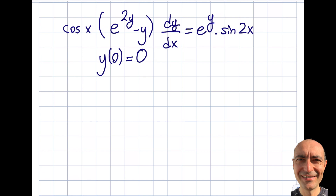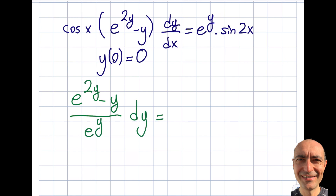First I need to check whether I can separate the equation so one side has only y-dependence and the other only x-dependence. Looking at the equation, e^y can go on the y-side and cosine x on the x-side. So I'll arrange it: (e^(2y) − y) divided by e^y dy equals sine(2x) cosine(x) dx. Let me verify this looks correct — yes, this is good.